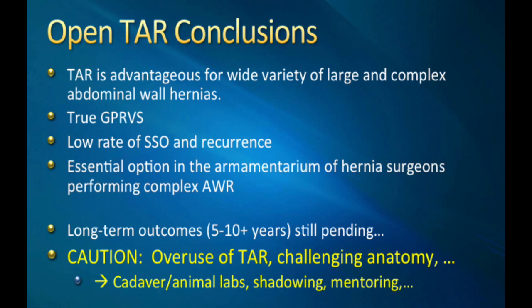In conclusion, I believe that TAR is advantageous for a wide variety of large and complex abdominal wall hernias. It really is true giant prosthetic reinforcement of the visceral sac. It's got a low rate of surgical site occurrence and event, as well as a low rate of hernia recurrence. For those embarking on complex abdominal wall reconstruction, it really is an essential option in the armamentarium of hernia surgeons. That said, long-term outcomes — five, ten years plus — are still pending.